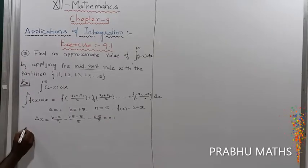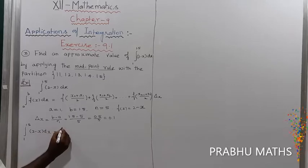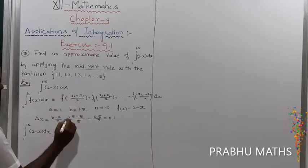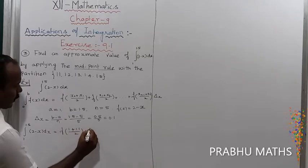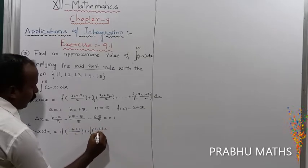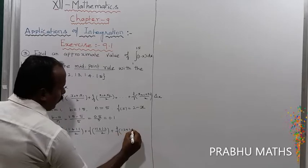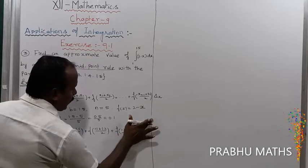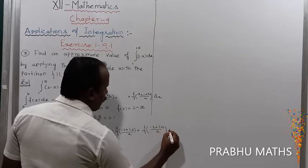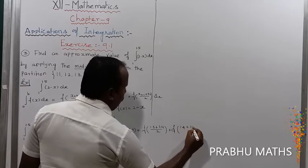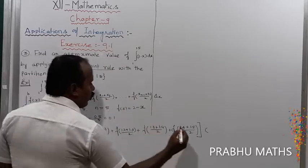Next, the integral from 1 to 1.5 of (2 minus x) dx equals f of the midpoints times delta x. The midpoints are computed from the partition points. Delta x is 0.1.